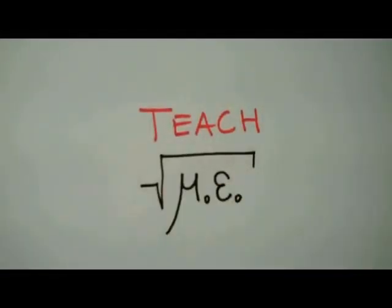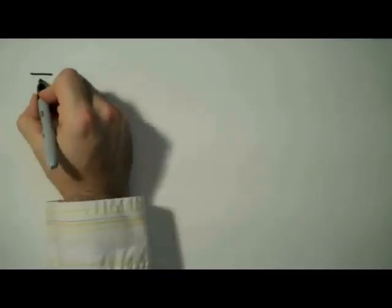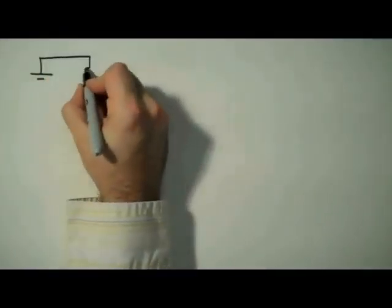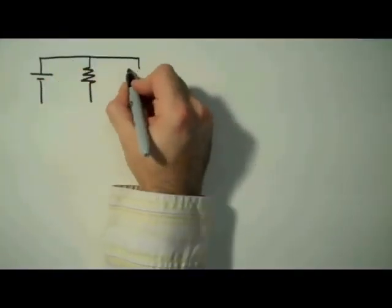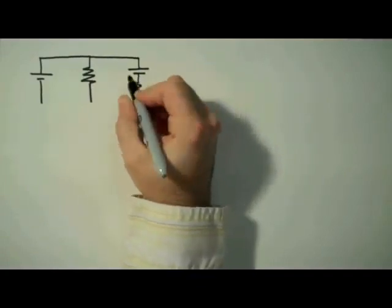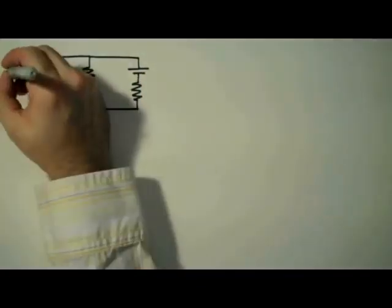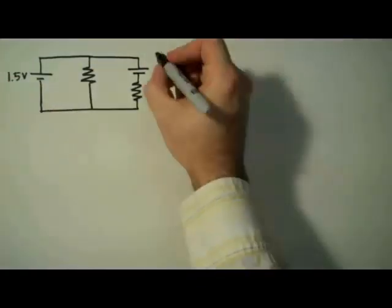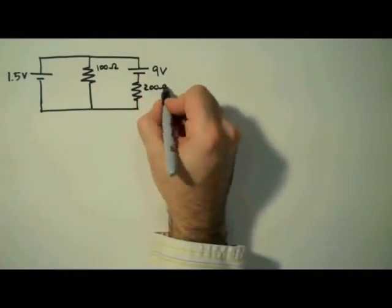Hello, everyone. I'm Jesse Mason, and for this edition of Teach Me, we're going to use Kirchhoff's rules to analyze a circuit. Specifically, we're going to determine the current through, the voltage across, and the power dissipated by the two resistors that you see here.